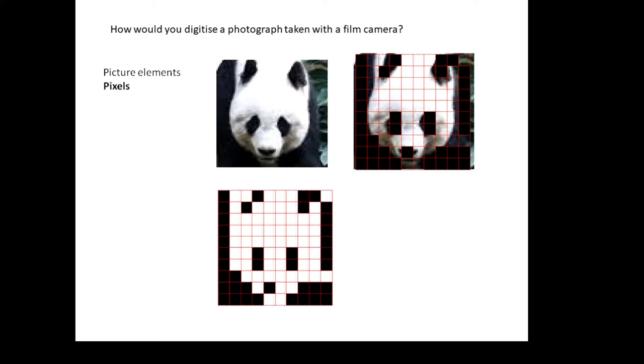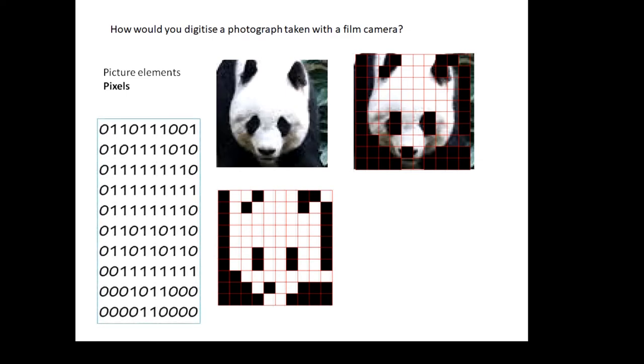A pixel is a picture element. This picture of Percy the panda is a 10 by 10 grid. Looking at each picture element, I'm making a choice: is it black or white? If it's black, I call it zero. If it's white, I call it one. We end up with digital information, binary information.